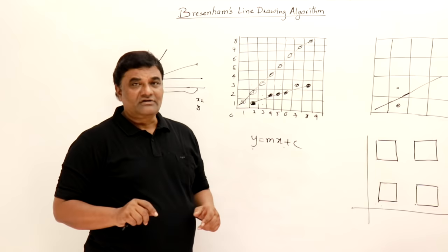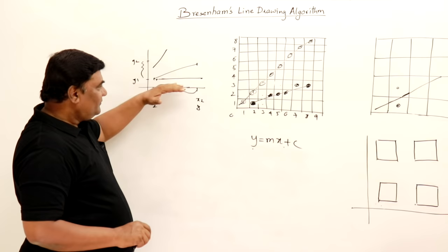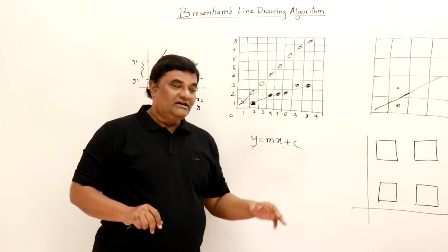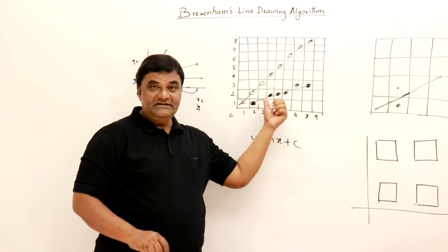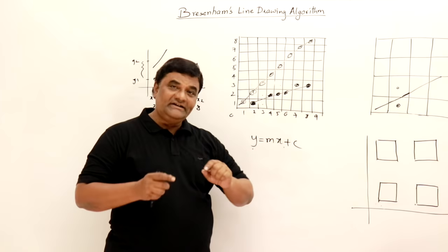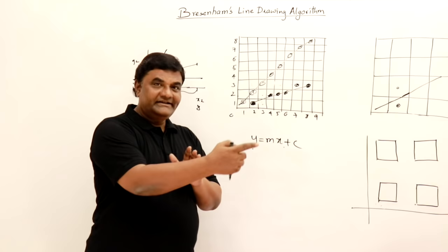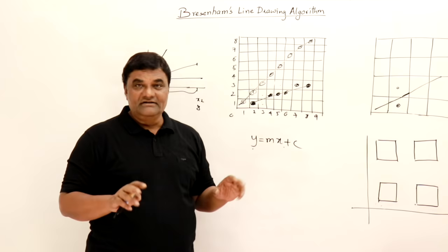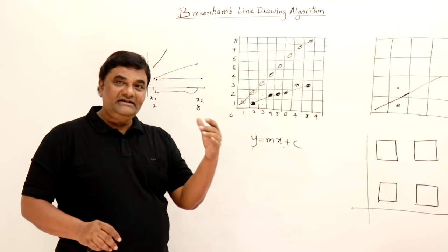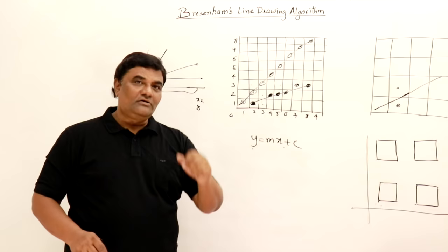To summarize the basics: the line equation y = mx + c was given; lines can have slope equal to 1, less than 1, or greater than 1; converting the line to pixels is called rasterization; we use sampling to get pixel coordinates; for slope equal to 1 both x and y always increase, but for slope less than 1, x always increases while y may or may not increase.